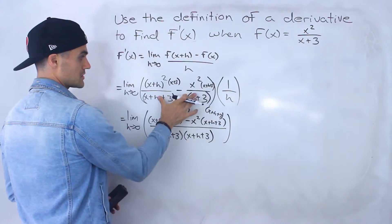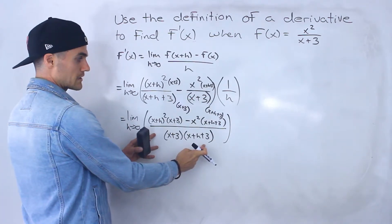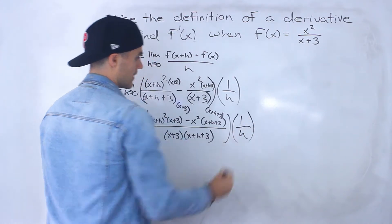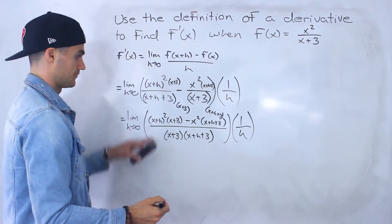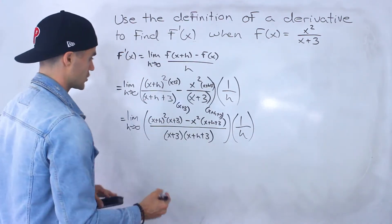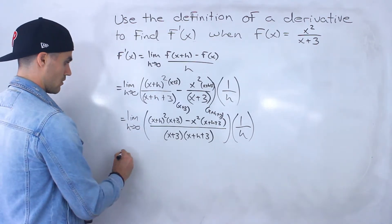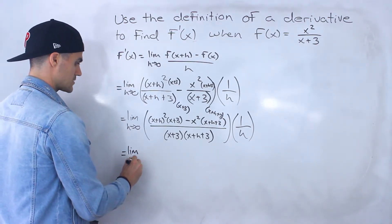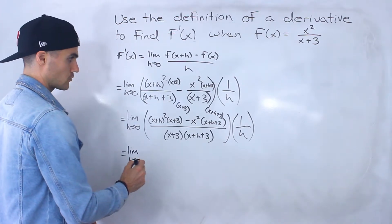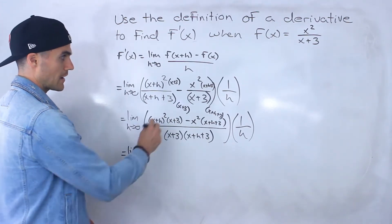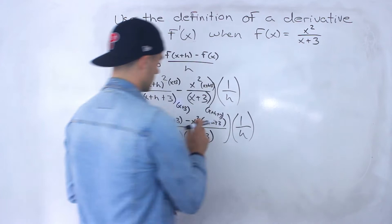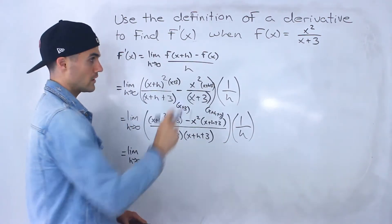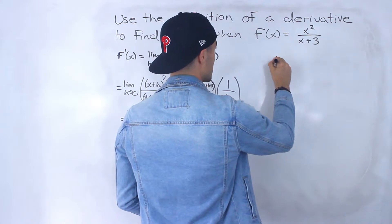Notice we took these two fractions and made them into one fraction. We still have to simplify that numerator, but we're on the right track now because we have one fraction, and all that's left to do is simplify that numerator, which is going to be a bit of a headache. I'll do it on the side here.